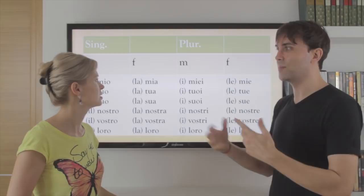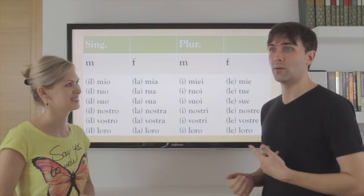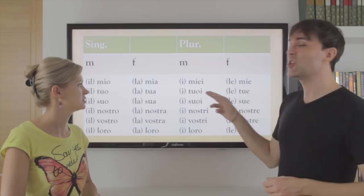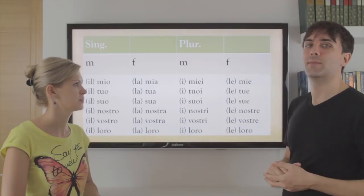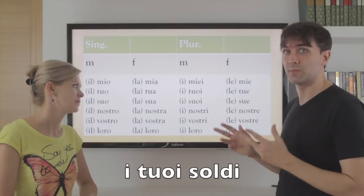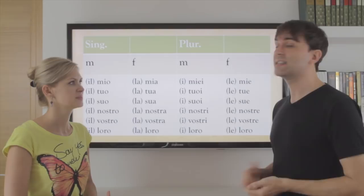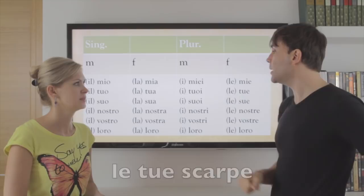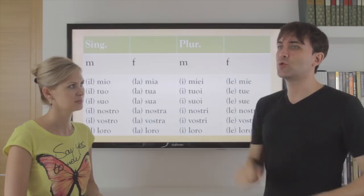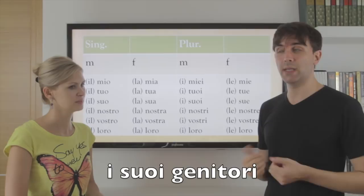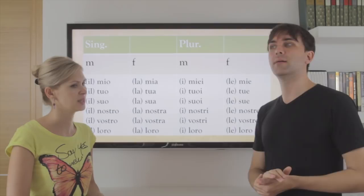The TV show 'Friends' in Italian is called Amici. I tuoi, le tue. Marina: i tuoi soldi — your money. Soldi is plural. Le tue scarpe — your shoes. I suoi, le sue. I suoi genitori — his parents. Le sue sorelle — sisters.